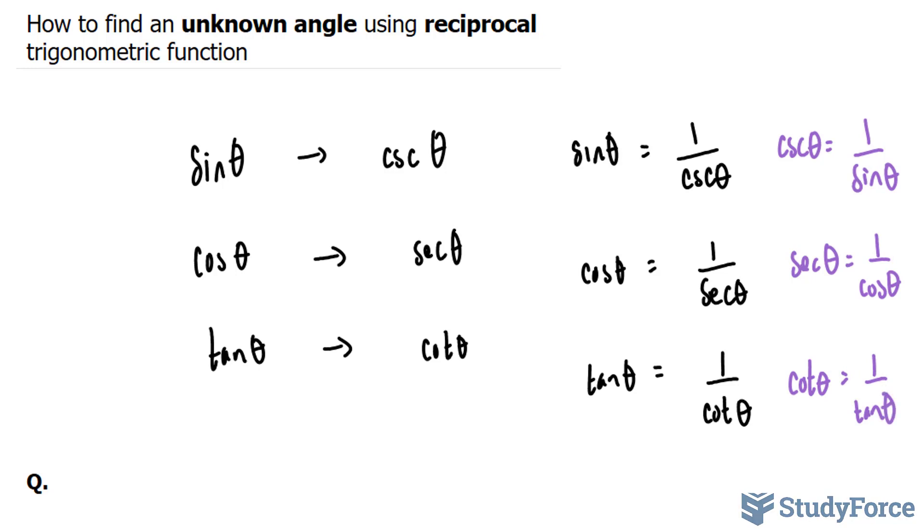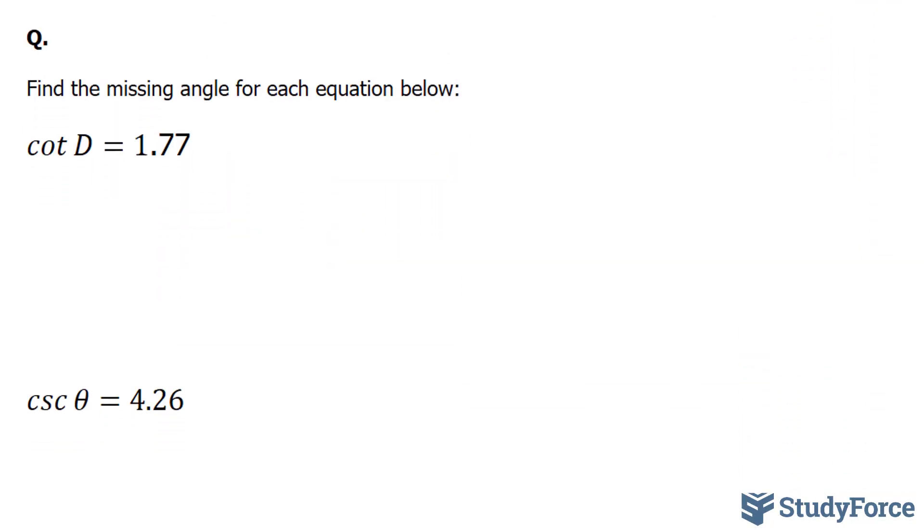So let's start with a question. The question asks, find the missing angle for each question below. And notice that here they're asking us to find angle D. Now unfortunately, if you take a look at your calculator, here's mine.